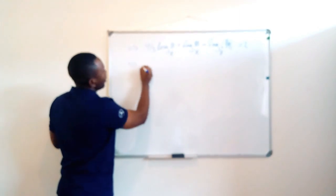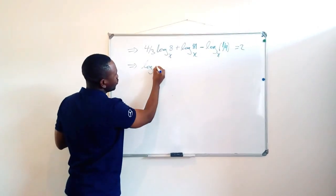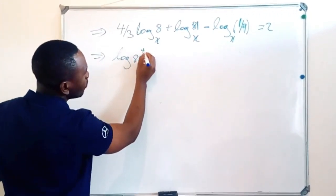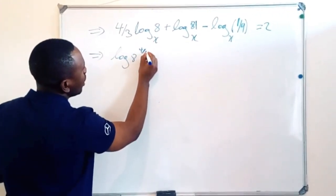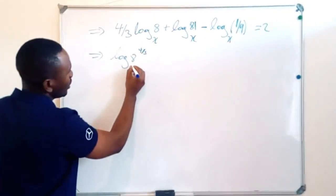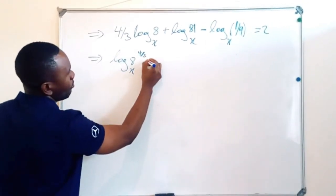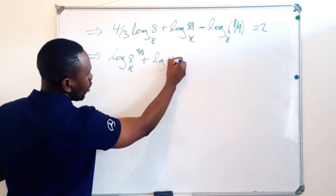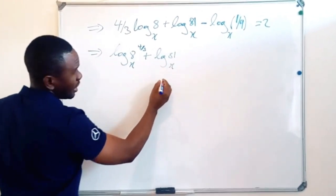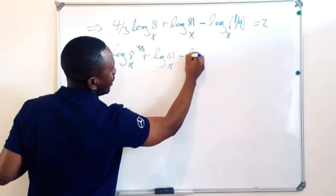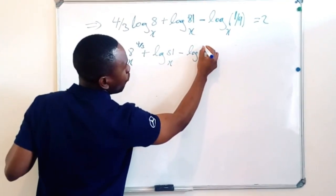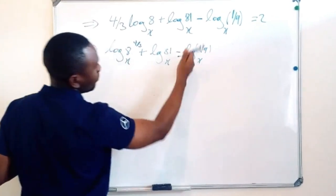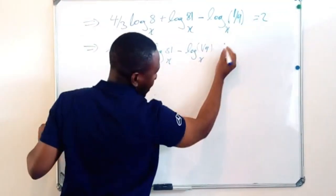So we're going to write it this way. That would be log of 8 exponent 4/3 in base x plus log of 81 in base x minus log of 1/9 in base x. And that one, we know what that means.